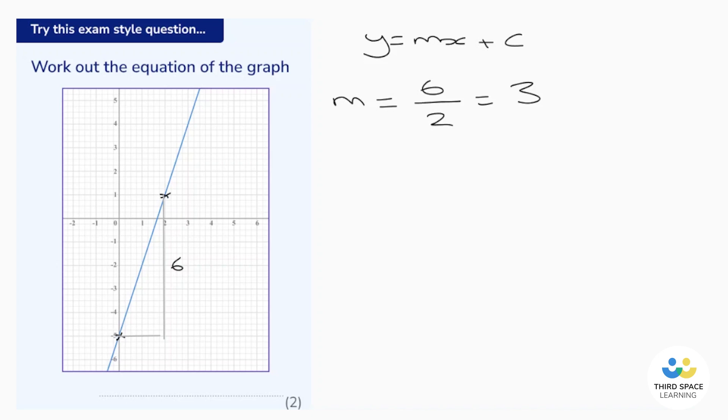Next, let's look at the y-intercept. C tells us where the graph crosses the y-axis. So the y-axis is the vertical axis, and we can see it crosses at this point here, negative 5. So c is equal to negative 5.